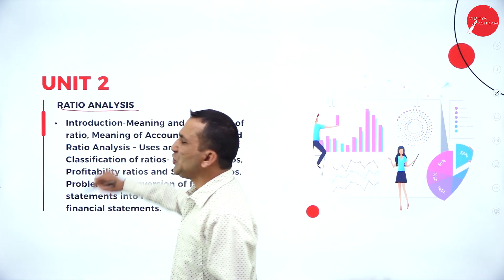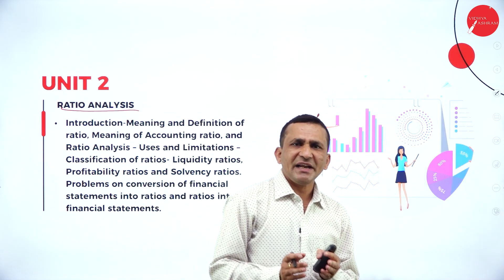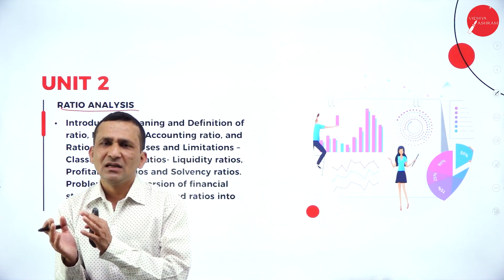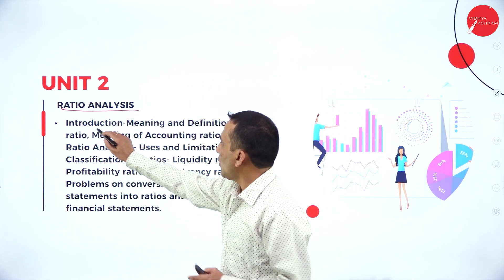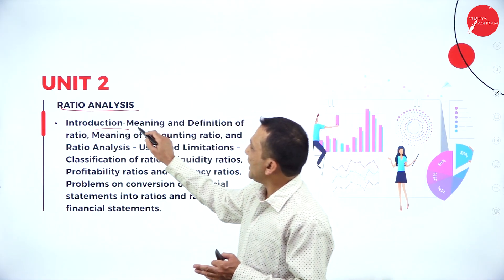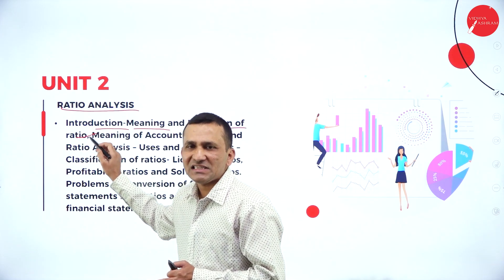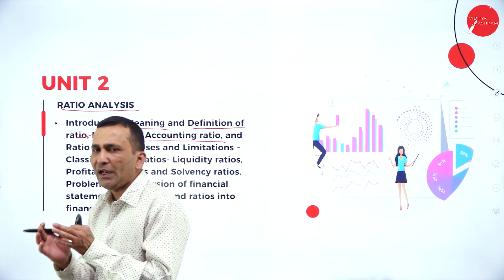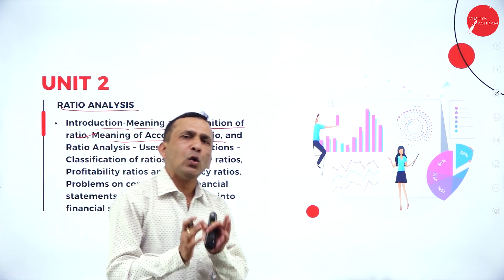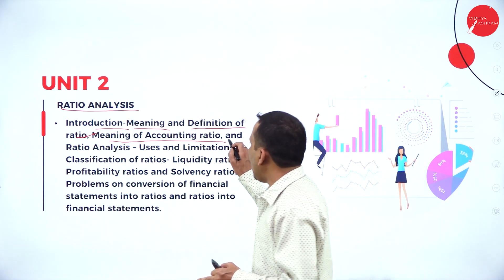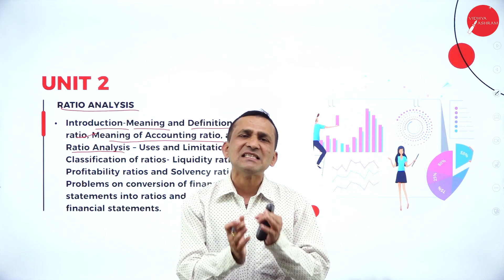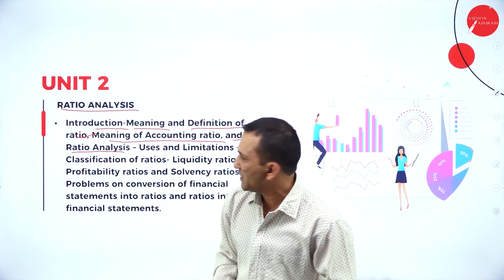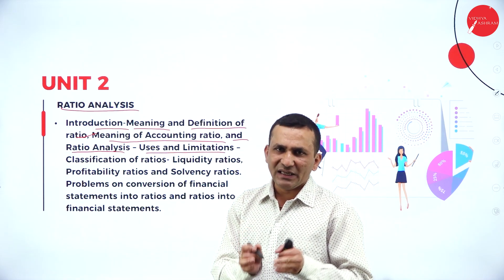Under the second unit, Ratio Analysis, a ratio is essentially a proportion used to compare two variables. You will get clarity on the meaning and definition of ratio, the meaning of accounting ratio, and what ratio analysis involves — how management analyzes too many factors and variables. You'll also learn the uses and limitations of ratios.